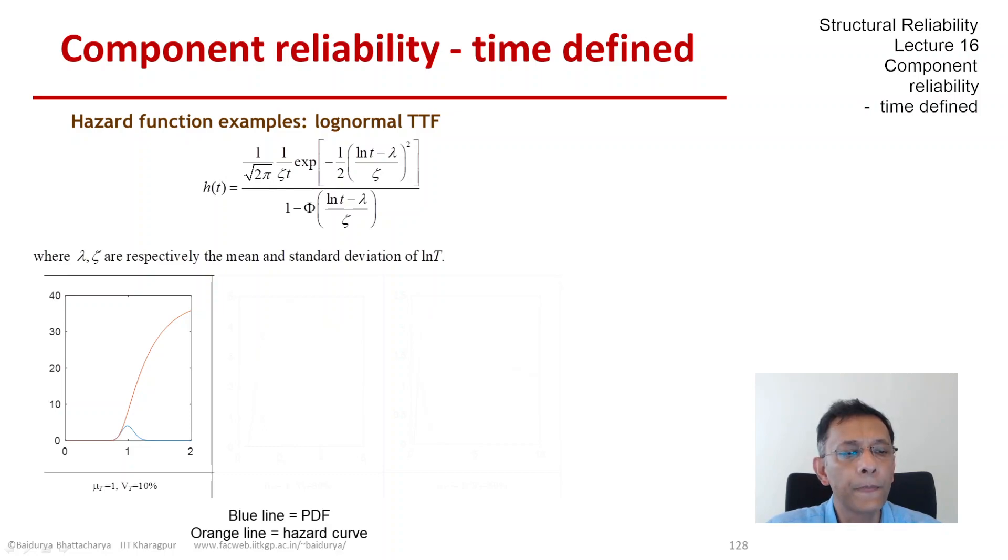And there we see the blue line is the PDF and the orange line is the hazard function. So clearly, the hazard function is an increasing type. And so it behaves similar to that of the normal TTF.